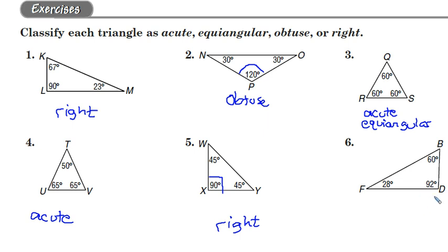And notice number six. It's almost 90 degrees, but 92 is a little bit greater than 90 degrees, so it is obtuse. And there we go.